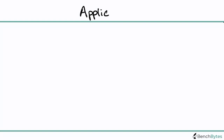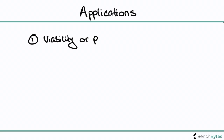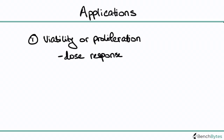Now that we've talked about what the reaction is, let's talk about the applications of this assay. One of the main applications is looking at viability or proliferation, as we've already discussed. In practical terms, some experiments you can do with this include a dose response assay — for example, if you range the concentration of a drug, how do your cells respond, or what's an appropriate dose?